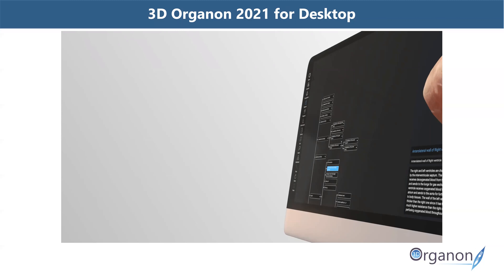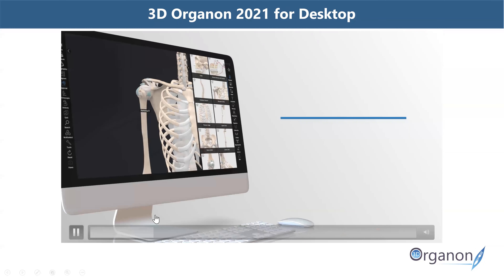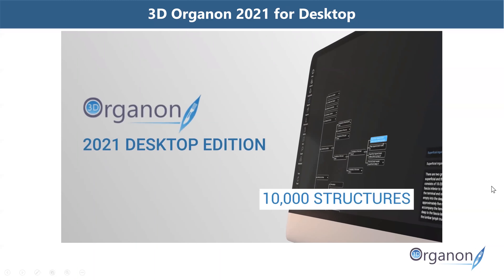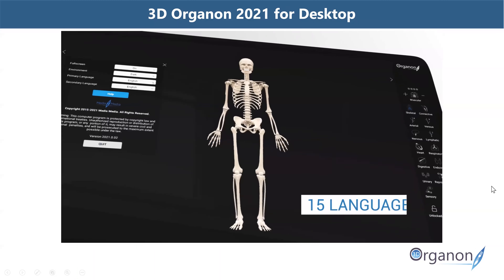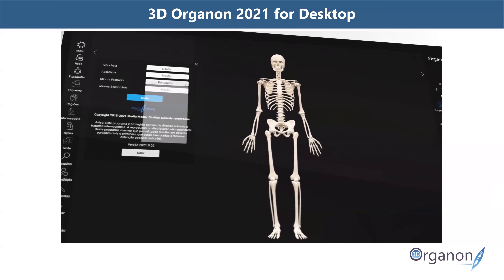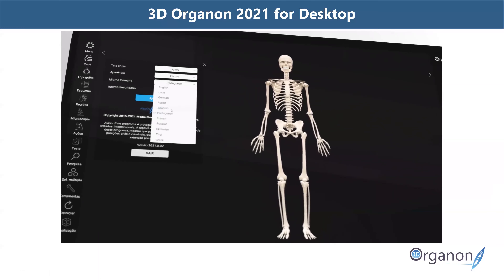Explore 15 body systems, including over 10,000 realistic anatomical structures. That's the 2021 desktop edition with 15 body systems, 10,000 realistic anatomical structures, and 16 languages to choose from.